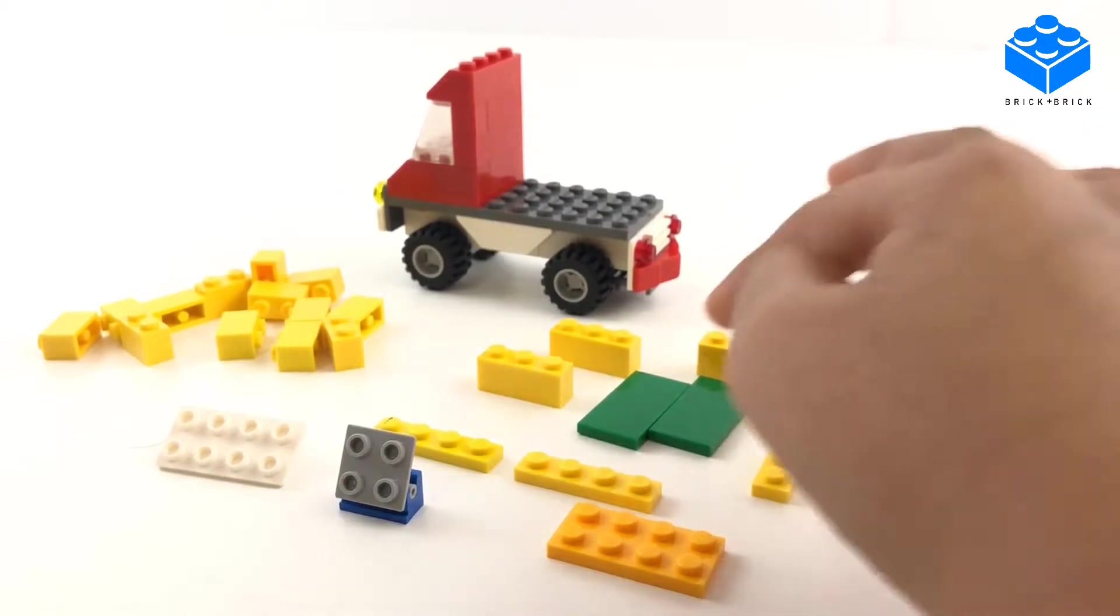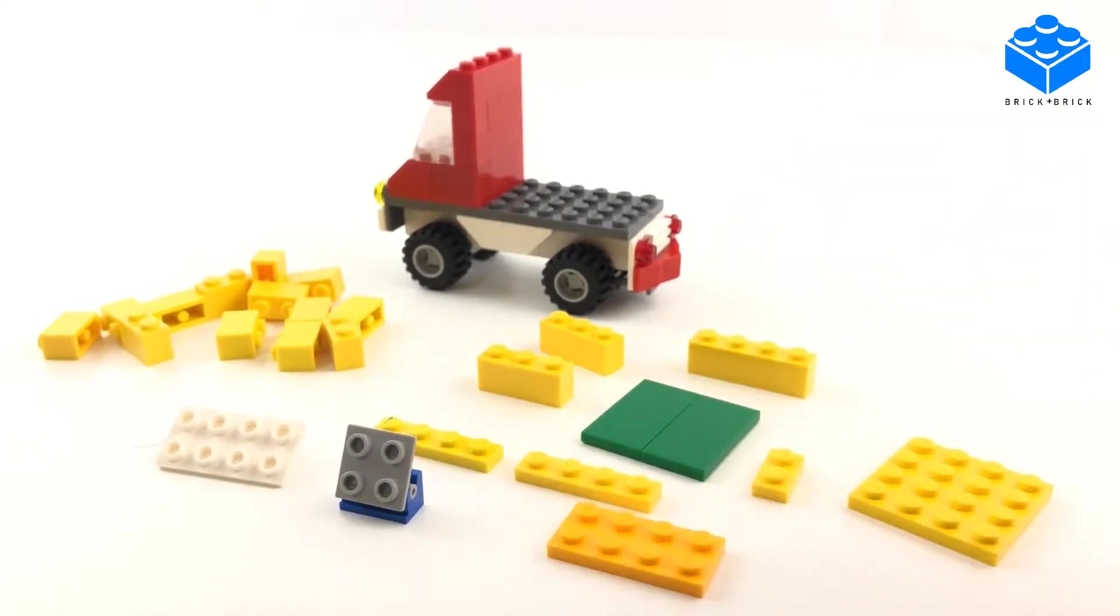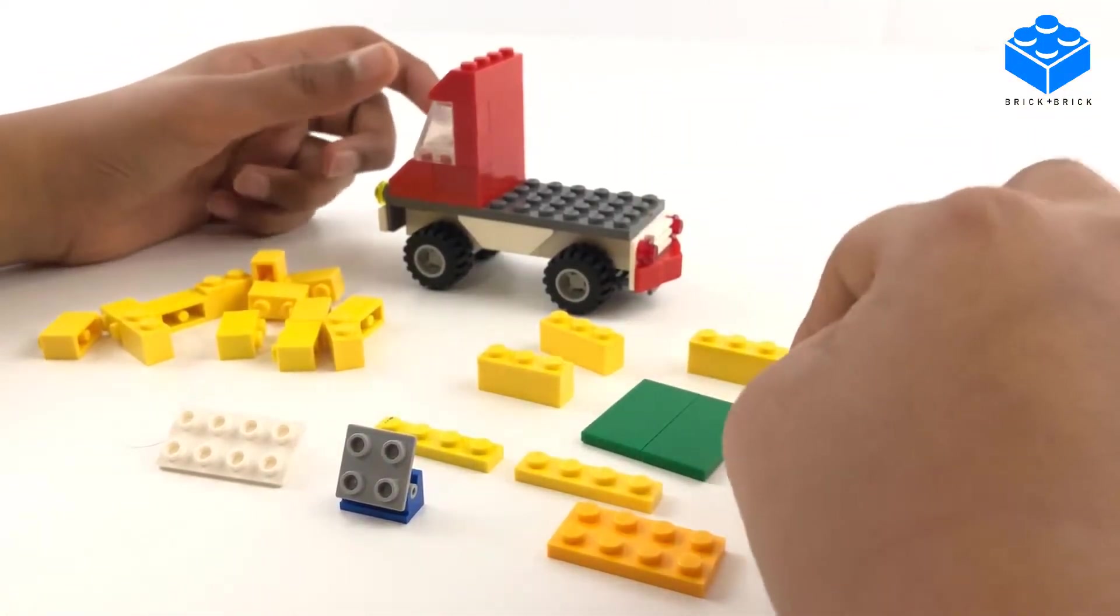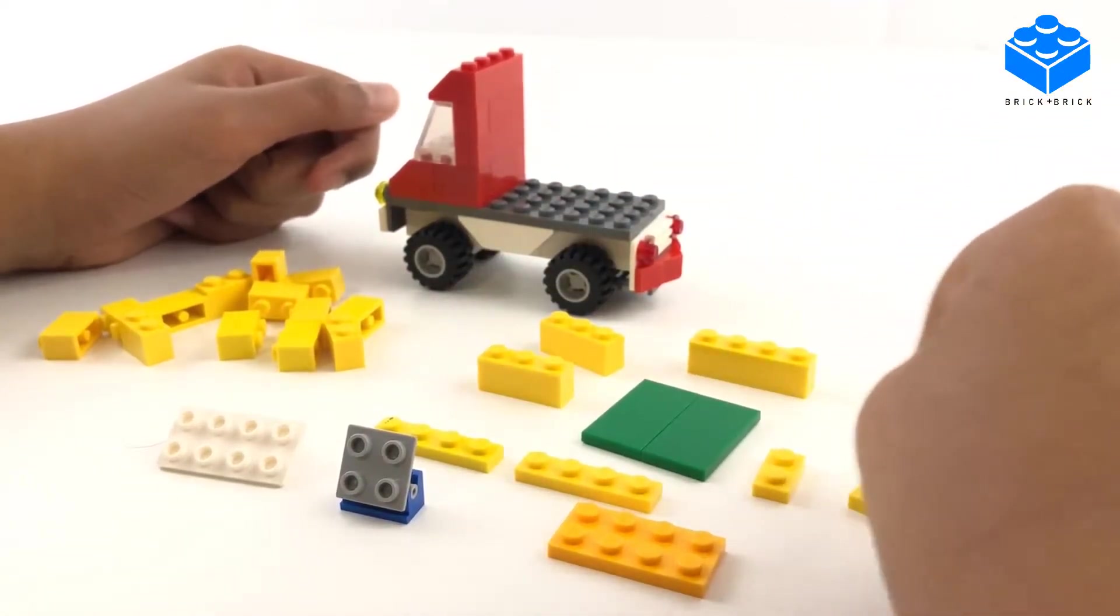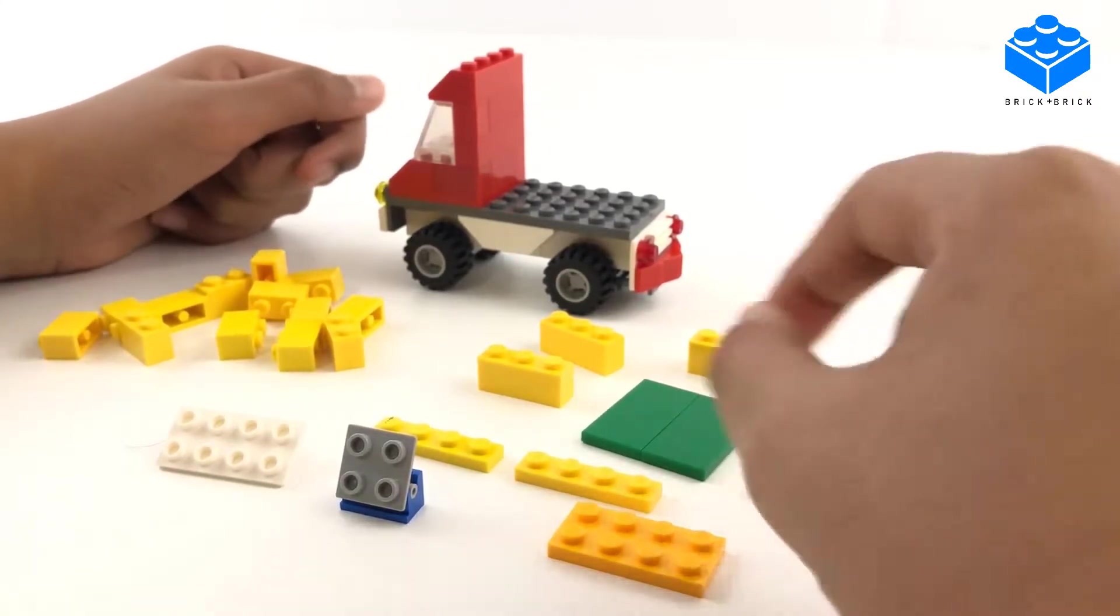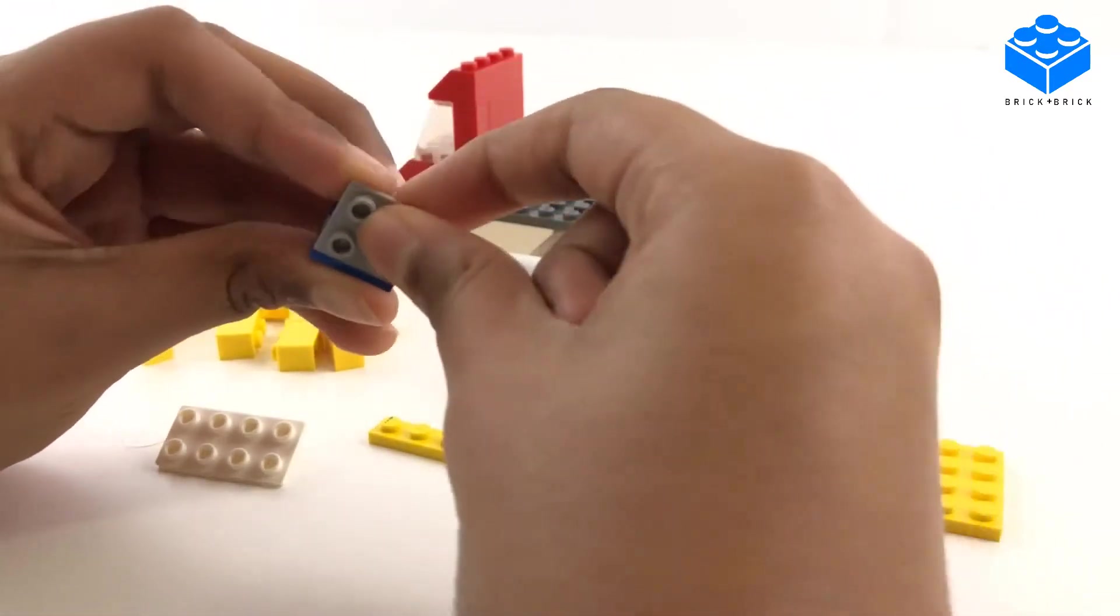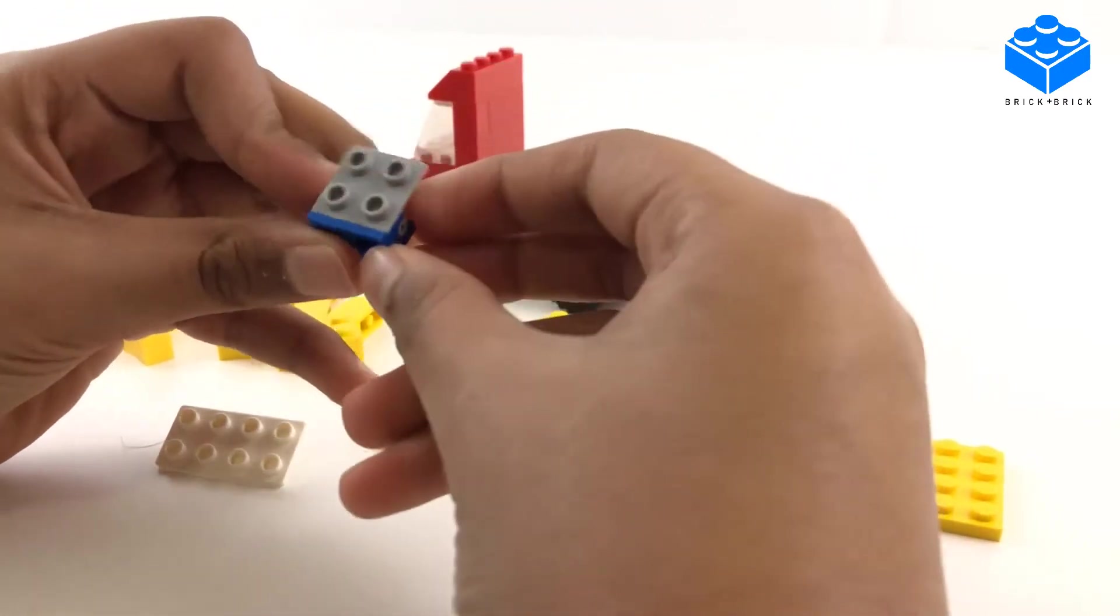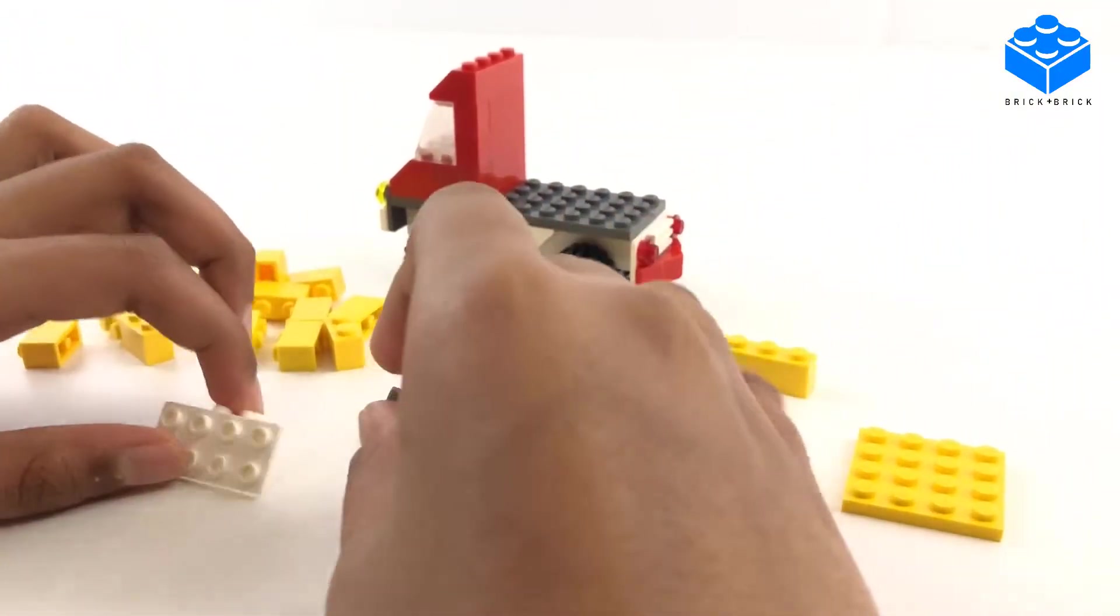Two of these one by threes, it really depends depending on your size. One of these one by fours, two two by four tiles, I chose green because those are available to me and these are basically required for the size of the cargo hold. One one by two flat piece, two one by four flat pieces, one four by four flat piece, one two by four flat piece, one of these hinge displays that they've got here, and one two by four black bracket.